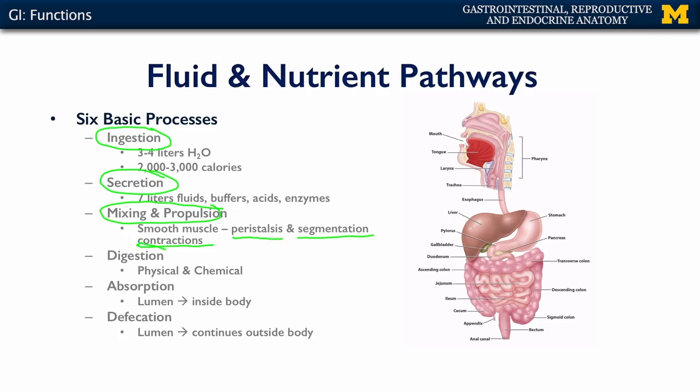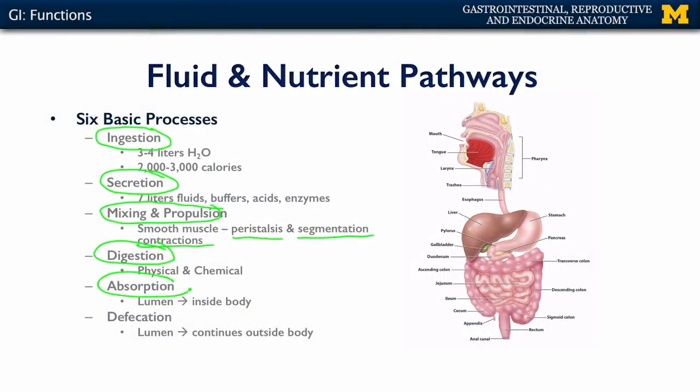There are also processes of digestion occurring. This can occur at the physical level, such as teeth acting upon ingested materials, or the smooth muscle churning those materials with the digestive secretions. Or at the chemical level, various enzymes and acids are mixed with large particulate matter to help break it down into smaller portions that can then be absorbed by the lining of the GI system.